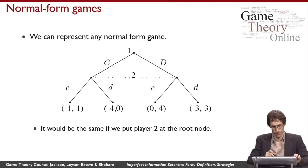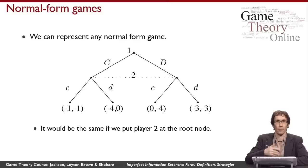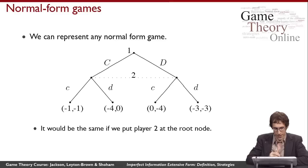The imperfect information extensive form is a more powerful representation than the perfect information case. One way to see this is that we can now represent any normal form game in this representation — which we couldn't do with perfect information games. For example, here's how to represent the TCP backoff game, or equivalently the Prisoner's Dilemma, in imperfect information extensive form.